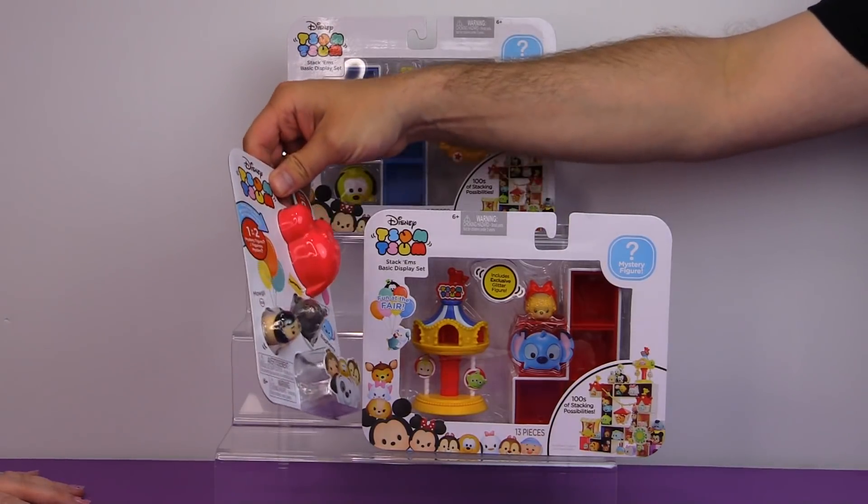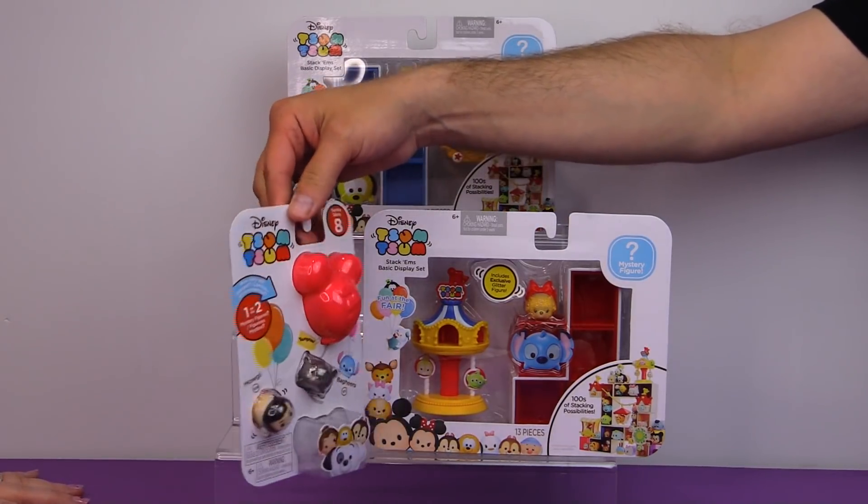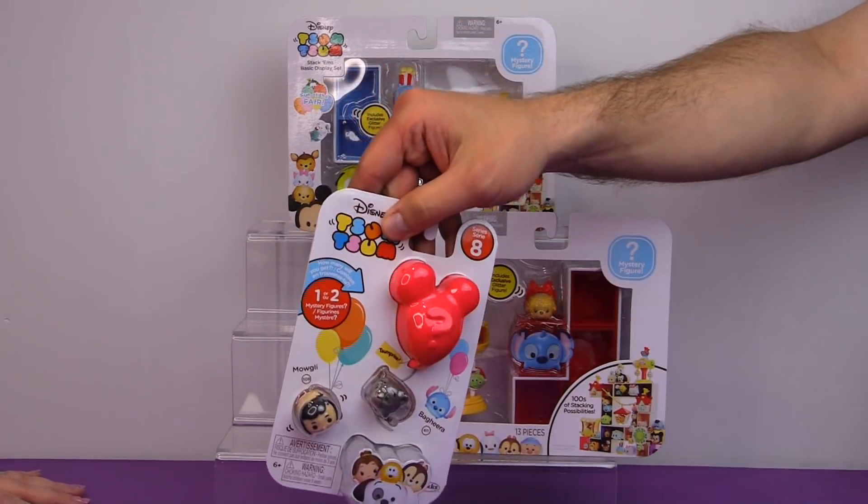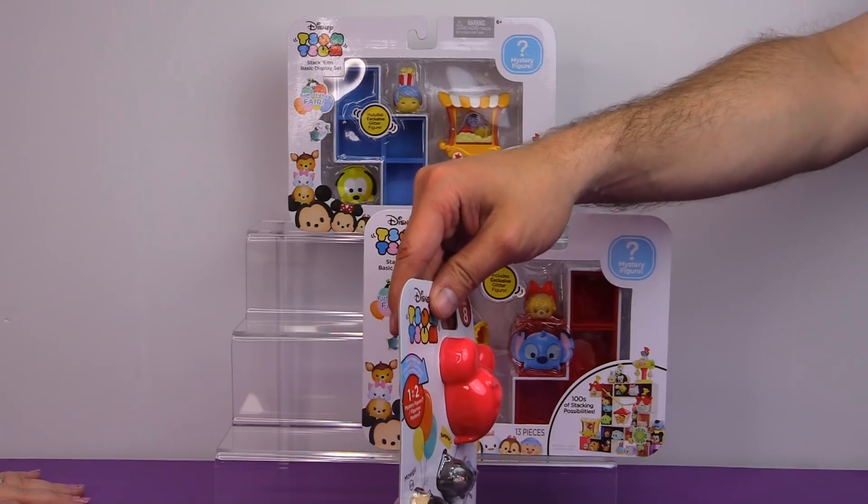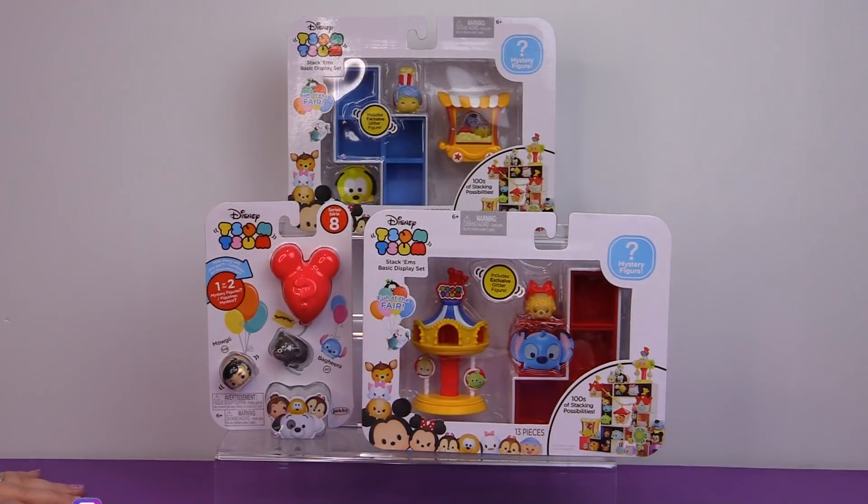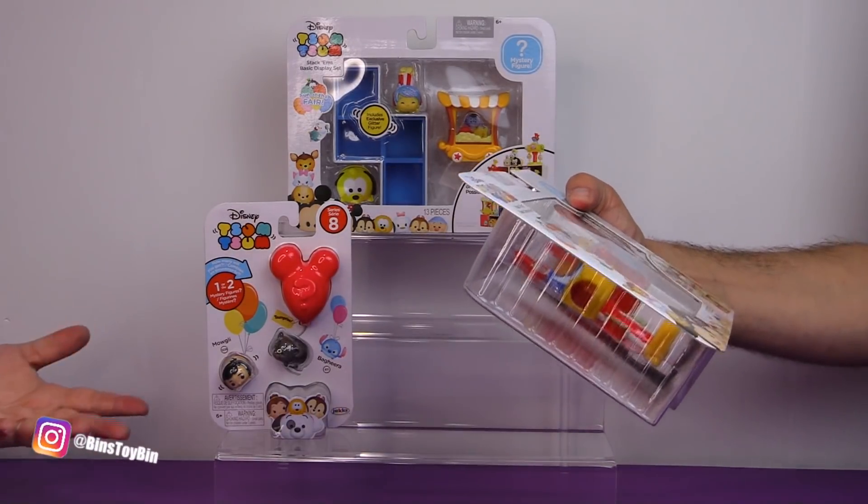Yeah. We have another Tsum Prize because this is from series eight with a balloon in there. We're going to see Mowgli and Bagheera. But who's in that balloon? Do you have any guesses? Maybe Mickey. Maybe Mickey? I don't know. We'll find out. I wonder if it's going to be a Jungle Book character.